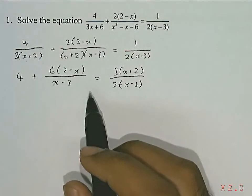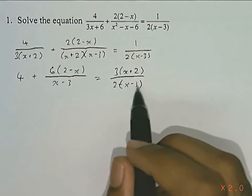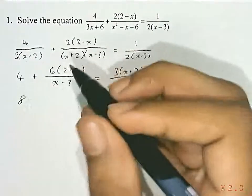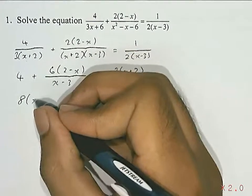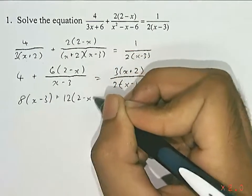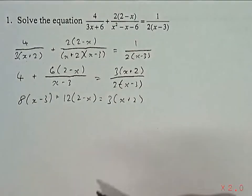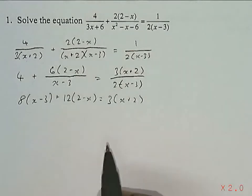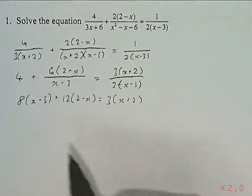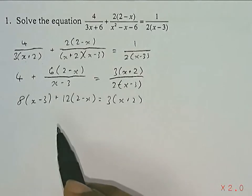That will cancel off this x plus 2 term and leave just x minus 3. We're left with this expression. Now let's multiply everything by 2 times x minus 3 to get rid of the rest of the denominators. And now you're left with quite a simple equation.